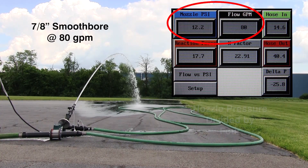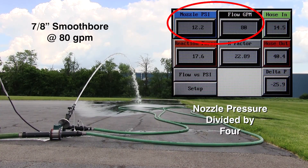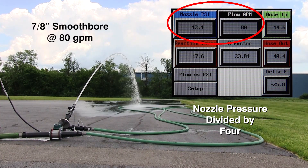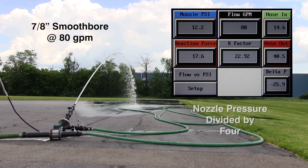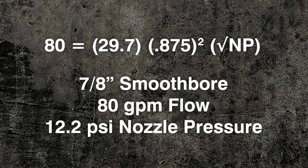No — nozzle pressure isn't divided in half. Dividing the flow in half actually divides the nozzle pressure by 4. The textbook formula predicted this result, and our flow test device confirmed it.